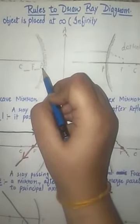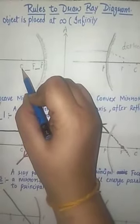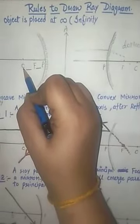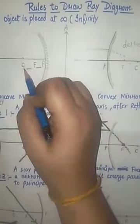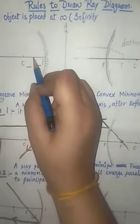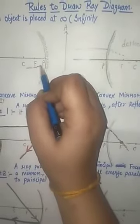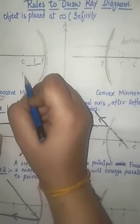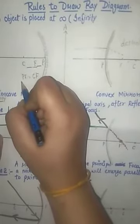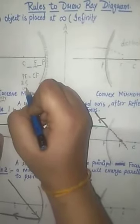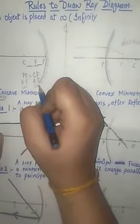The center of the mirror is known as the center of curvature, noted by C. The midpoint between P and C — that is, between the pole and the center of curvature — is known as the principal focus. So PF must be equal to CF. That means if this distance is 2.5 cm, then this distance must also be equal to 2.5 cm.